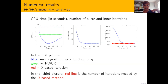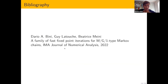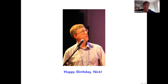In the last two plots I report the number of outer iterations — which decreases rapidly as the degree increases and then stabilizes — and the number of inner iterations needed to solve the polynomial matrix equation at each step. This work has been published in IMA Journal of Numerical Analysis. Happy birthday Nick — I'm very sorry not to be there to celebrate this anniversary with you. Thank you very much for your attention.